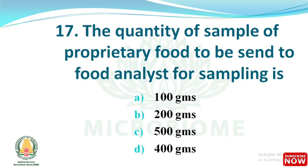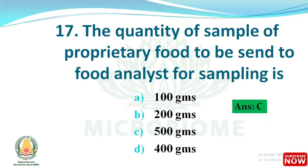Next question: the quantity of sample of proprietary food to be sent to the food analyst for sampling is which of the following? The options are 100 grams, 200 grams, 400 grams, and 500 grams. The right answer is option C: 500 grams.